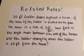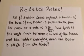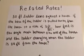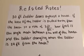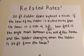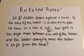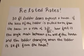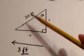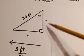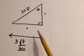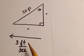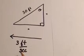Here we've got a 30-foot ladder leaning against a house. The base of the ladder is being pulled away from the house at a rate of 3 feet per second. How fast is the angle that's made between the wall of the house and the ladder changing when the ladder is 24 feet from the house?